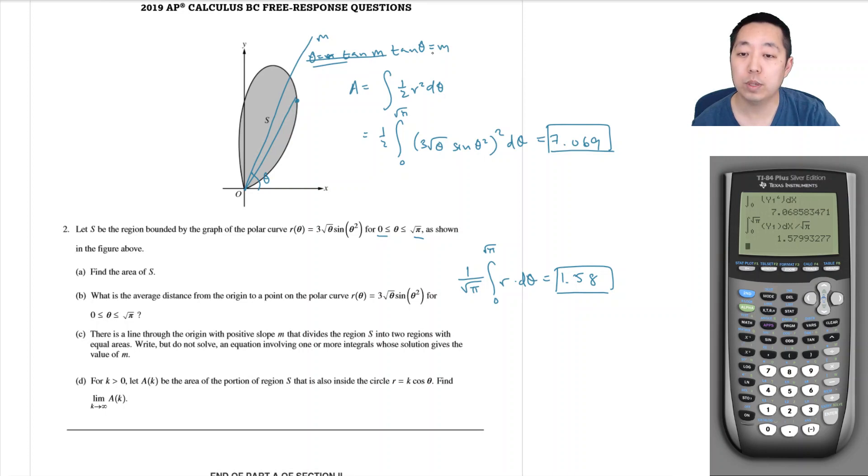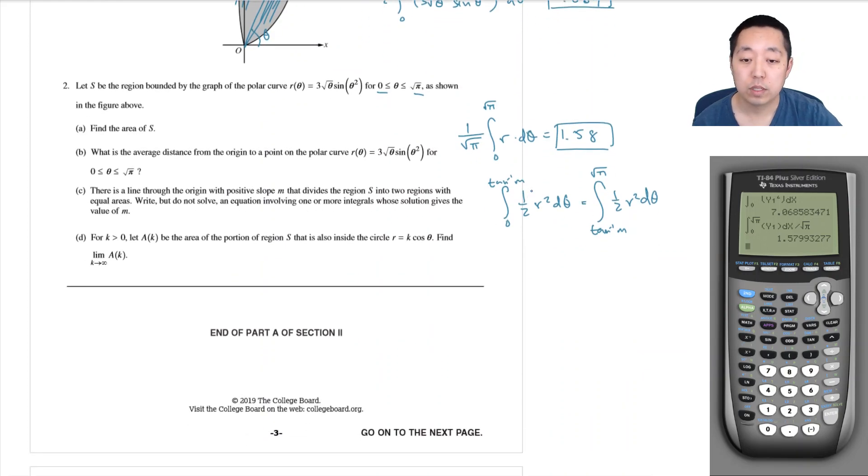Okay, so theta would equal tan inverse of m. So we would integrate two different integrals, the integral of the area of this region and the area of this region, and then set them equal to each other. So it'd be the integral from zero to arc tangent of m of one half r squared d theta, and then that would be the integral from arc tangent of m all the way to root pi of one half r squared d theta. I can get rid of the one halves if I wanted to, cancel the one halves on both sides and then plug in for r squared. So zero to tan inverse of m. Actually I think you could just leave it like this. Let me get rid of this. Probably just write it in terms of r theta, they would know what you meant. That would be fine.